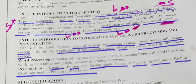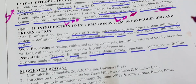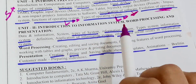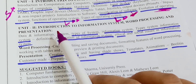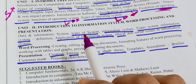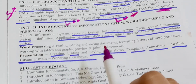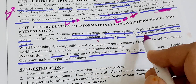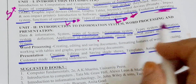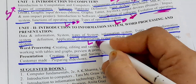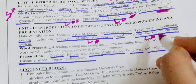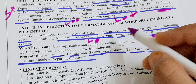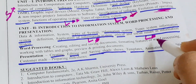Now for unit two — Introduction to Information Systems, Word Processing, and Presentation. The very most important topic in this unit is Application of Information System, and Social Issues in Information System. Both are very important for long answers. Learn these first.